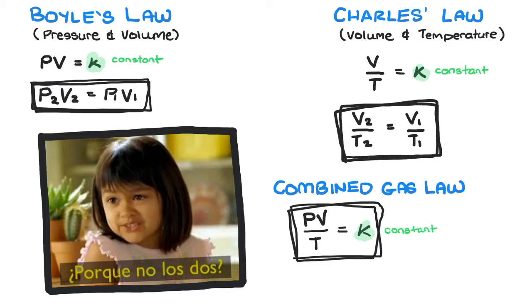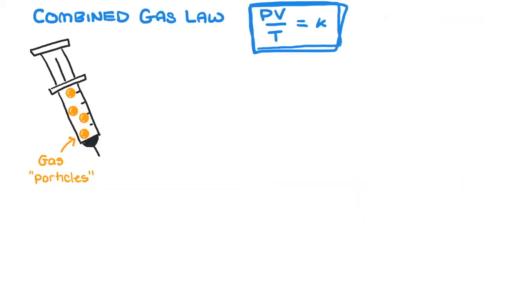Let's do some simple maths to understand this relationship. If pressure is 1 kPa, and volume is 2 litres, and temperature is 2 Kelvin, because it always has to be measured in Kelvin, K equals 1.